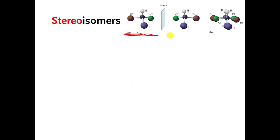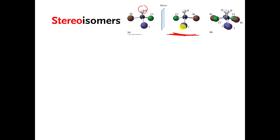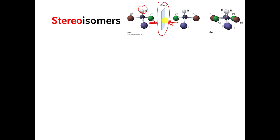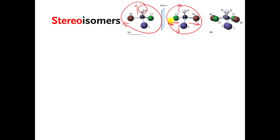Here is an example of two molecules that are stereoisomers of each other. There is a carbon here. This molecule has a hydrogen, chlorine, iodine, and bromine stuck to that carbon. If you look at this other molecule, there is a carbon in the middle with hydrogen, bromine, iodine, and chlorine stuck to it as well. You can see that they are mirror images of each other — the chlorines are pointing toward each other, the hydrogens are pointing up, the bromines are pointing away, and the iodines are pointing down.